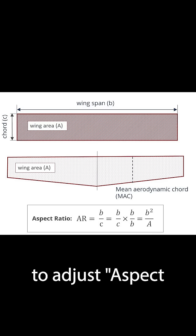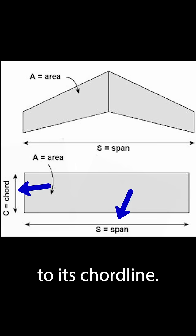The wings were extended to adjust aspect ratio. Aspect ratio is a comparison of the length of the wing's span to its chord line.